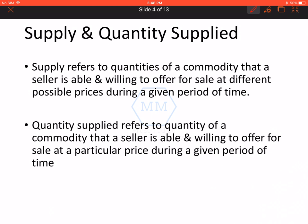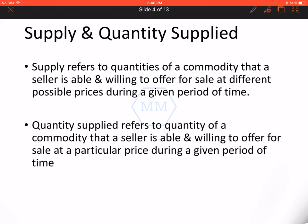Supply refers to quantities of a commodity that a seller is able and willing to offer for sale at different possible prices during a given period of time. Supply alag-alag price pe ek seller kitni alag-alag quantities offer karna chahta hai for sale, yeh batata hai. Quantity supplied vahin ek particular price pe kitni quantity ek supplier sell karna chahta hai, woh kehlata hai quantity supplied. Pore chapter mein jo term use hogi, that is not supply, that is quantity supplied.